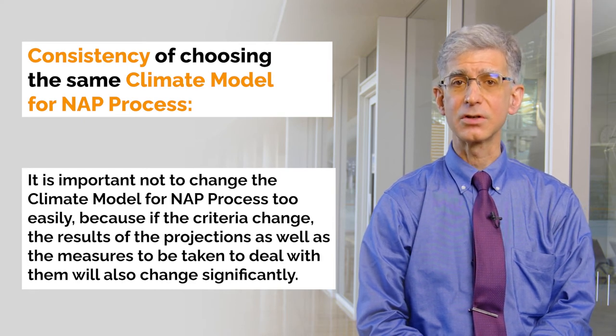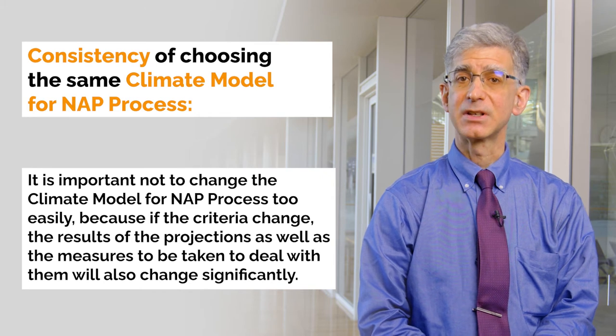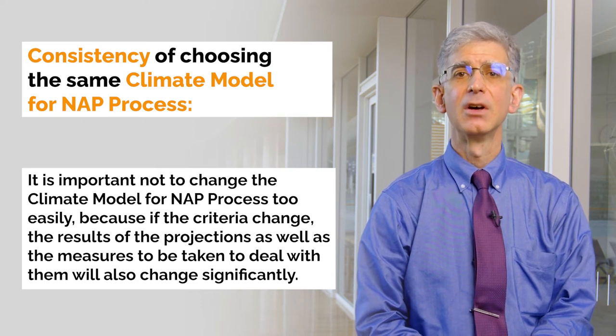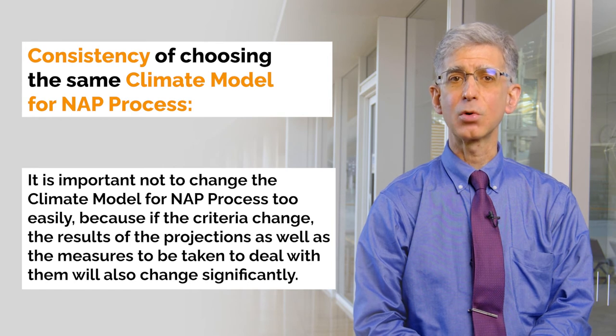Choosing which climate model to use for the NAP can be difficult, as different climate models produce very different future projections. The choice should not be made by policymakers alone, but should be made with the input of climate experts and researchers. It is reassuring to be prepared for the worst-case scenario, but we also need to consider the cost-effectiveness of adaptation measures, so in practice we may be tempted to choose a model somewhere in the middle. The important thing is that once you decide to use a model for future projections, it is important not to change it too easily, because if the criteria change, the results of the projections as well as the measures to be taken will also change significantly. So it is important to be consistent.